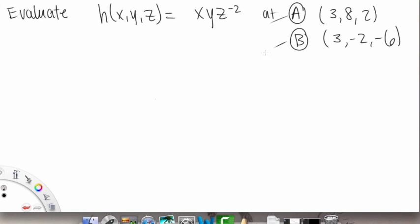We have two mini problems embedded in this one problem, so let's work with A first. So our 3, 8, 2, that point, each of these represents a different variable. So this is x equals 3, y equals 8, and z equals 2.